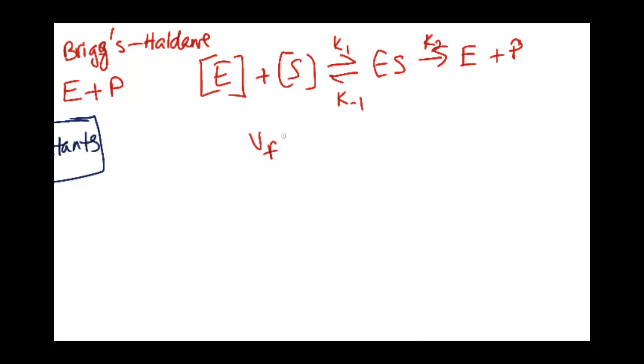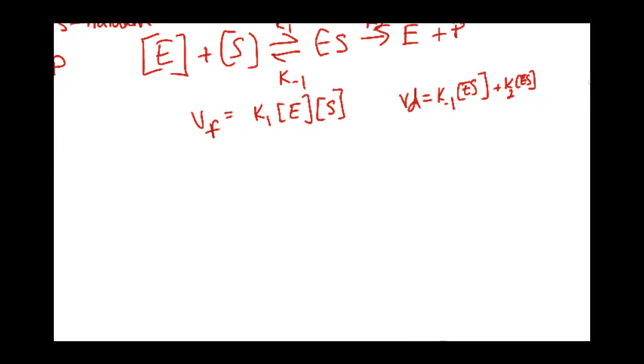The velocity of formation doesn't change. It's still going to be the k1 E S. And the velocity of dissociation is what does change though, because we have two dissociations. We have the reverse, and then we have the enzyme product one. Still the reactant is enzyme substrate. And if we were to factor out the ES...